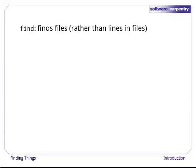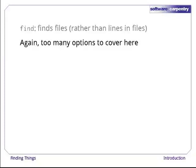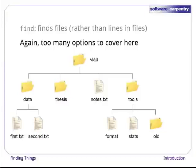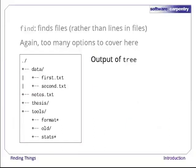While grep finds lines in files, the find command finds files themselves. Again, it has a lot of options — too many to cover here. To show how its basic features work, we'll use this directory tree. Under vlad's home directory is one file, notes.txt, and three subdirectories: thesis, which is sadly empty; data, which contains two files, first.txt and second.txt; and a tools directory that contains the programs format and stats, and an empty subdirectory called old.